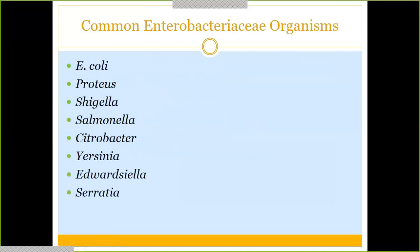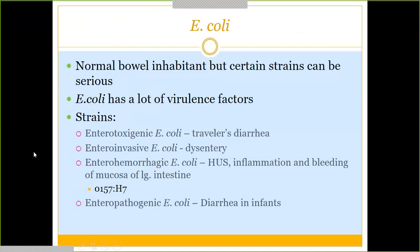Some very common Enterobacteriaceae organisms include E. coli — probably the biggest one we know — as well as Proteus, Shigella, Salmonella, Citrobacter, Yersinia, Edwardsiella, and Serratia. All of these are very commonly seen in the micro world and are definitely ones we need to know. There are others not listed, but these are the more common ones.